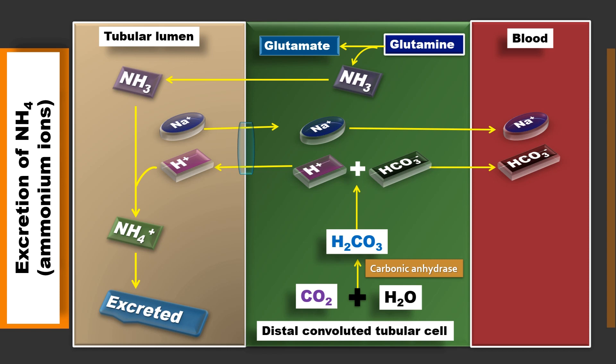There are four steps: secretion or excretion of hydrogen ion; recovery of bicarbonate in order to maintain the alkali reserve; excretion of titratable acids, which is the reason the pH of urine is acidic; and excretion of ammonia in the form of ammonium ions. These are the four steps by which our kidney maintains the normal pH of 7.35 to 7.45. This is the renal regulation of pH.